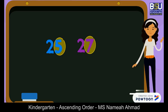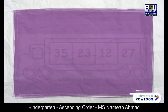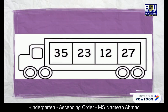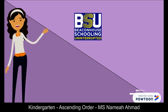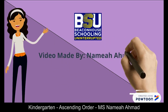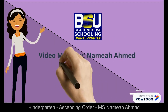Time for some action! Now you're going to sequence these numbers from smallest to greatest. So what will come first? 12, 23, 27, and 35. Bye bye students, I hope you have enjoyed your lesson today.